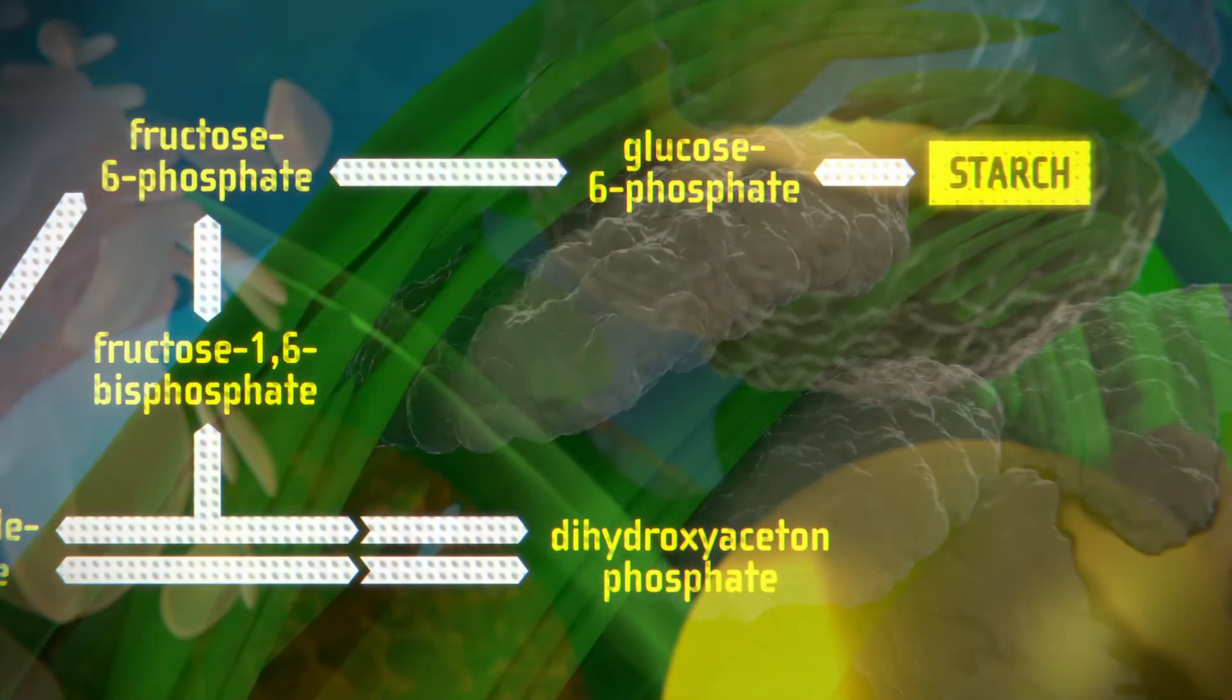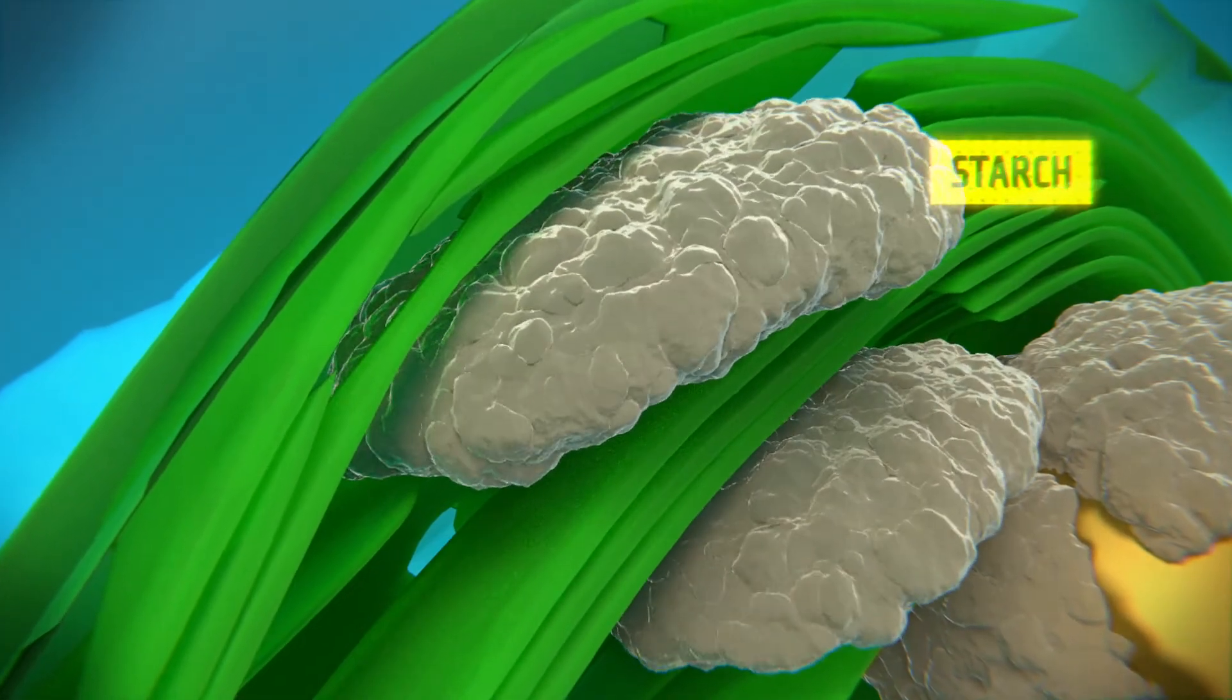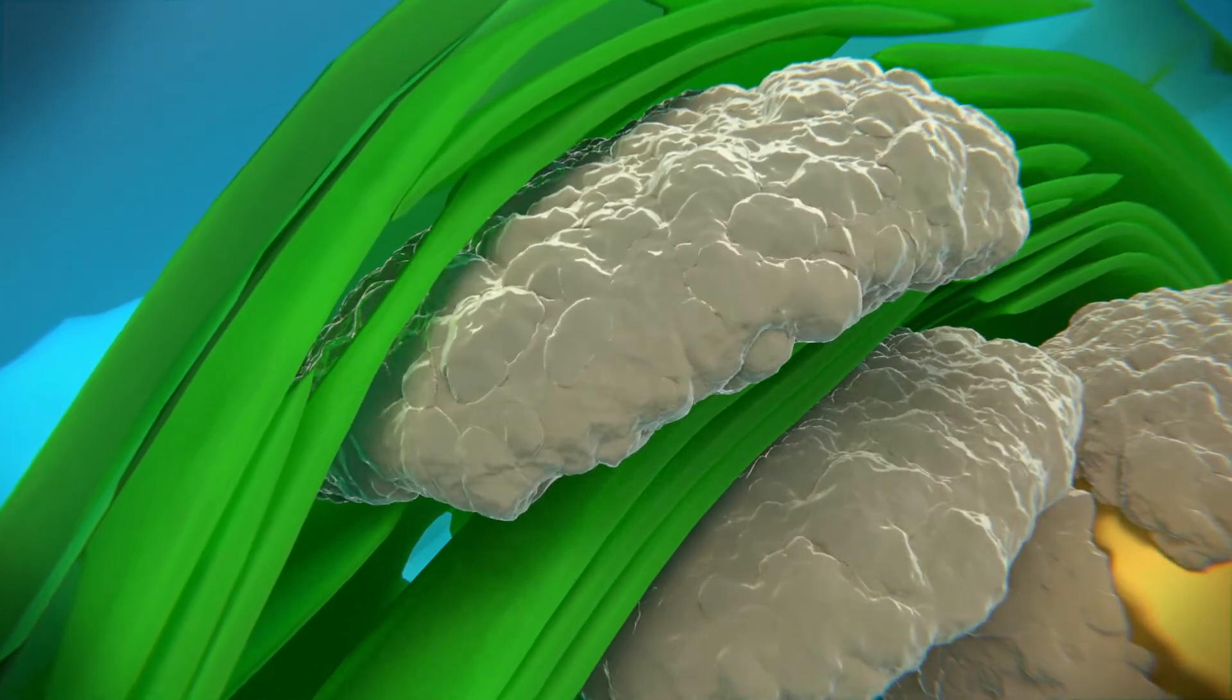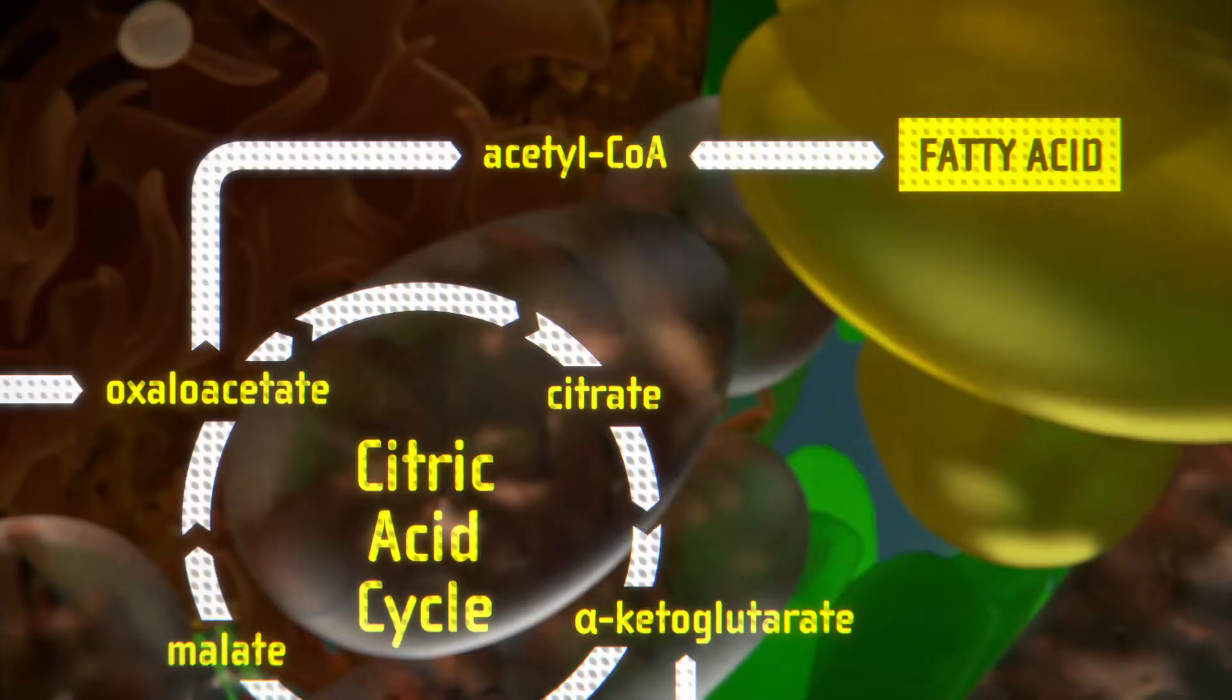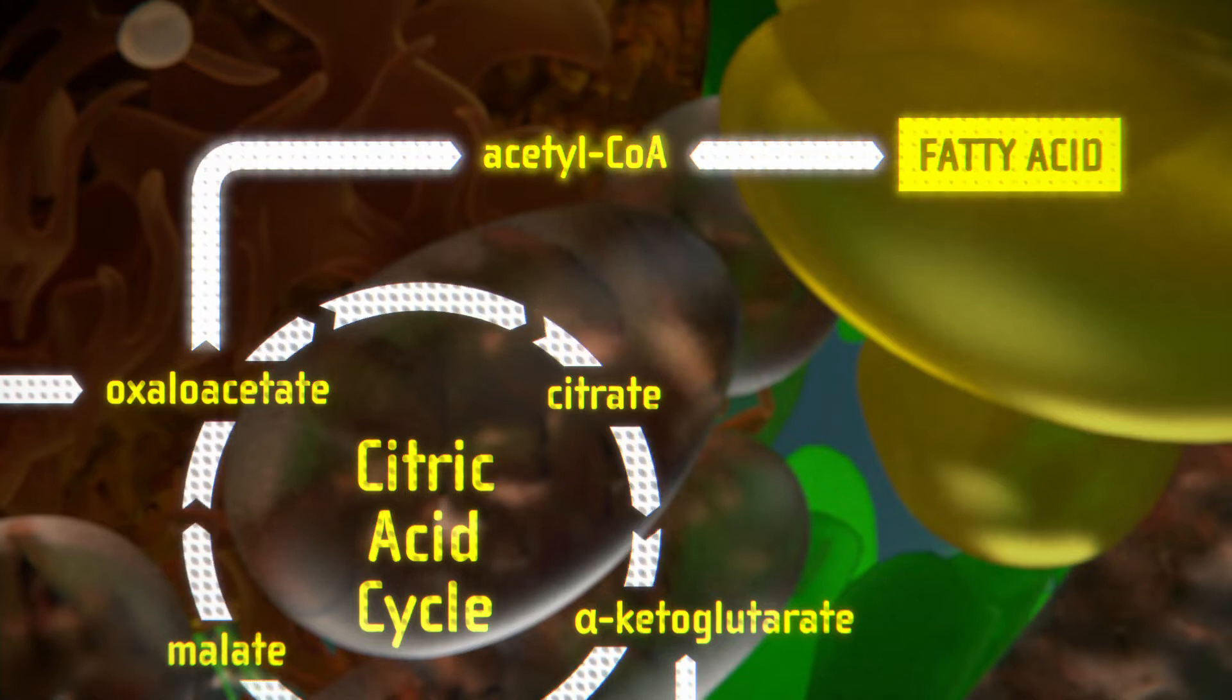Finally, it can also be stored in the form of starch by way of gluconeogenesis and neutral lipids, again via acetyl coenzyme A and lipid biosynthesis pathways.